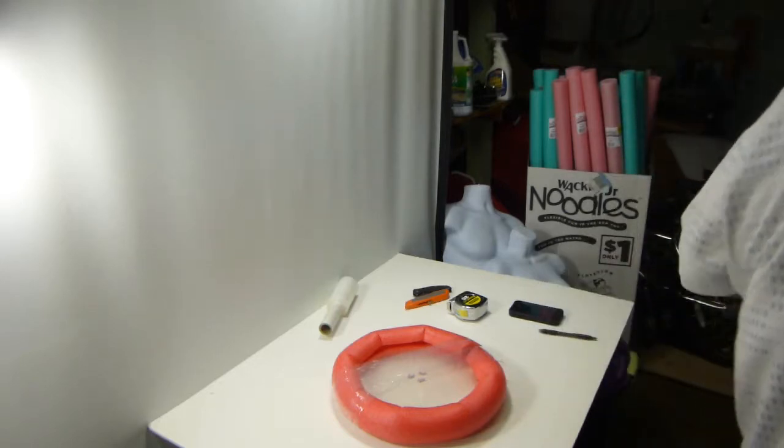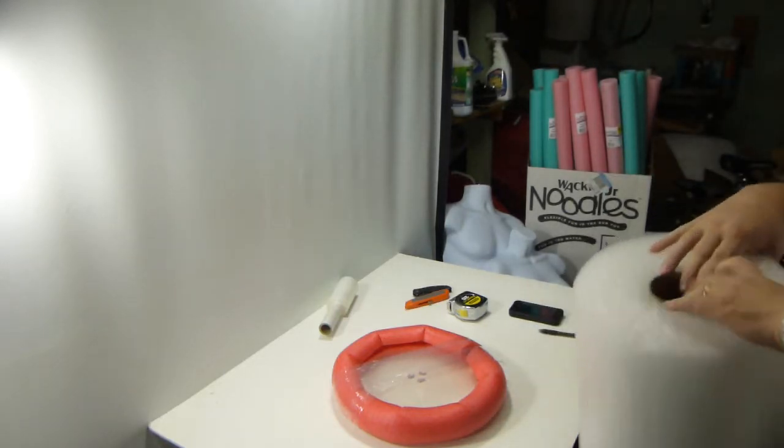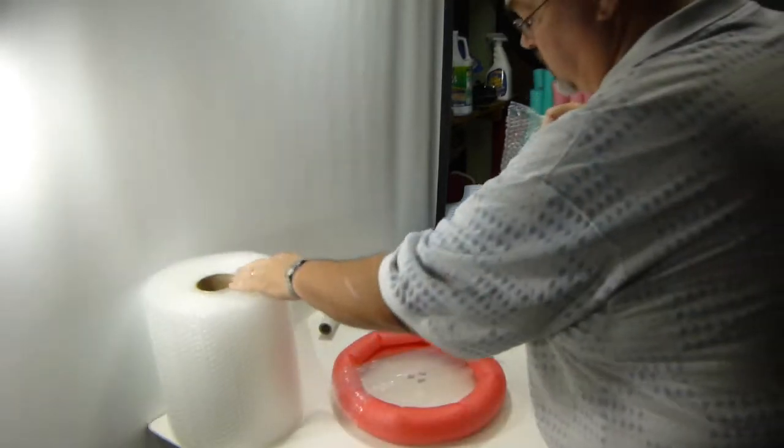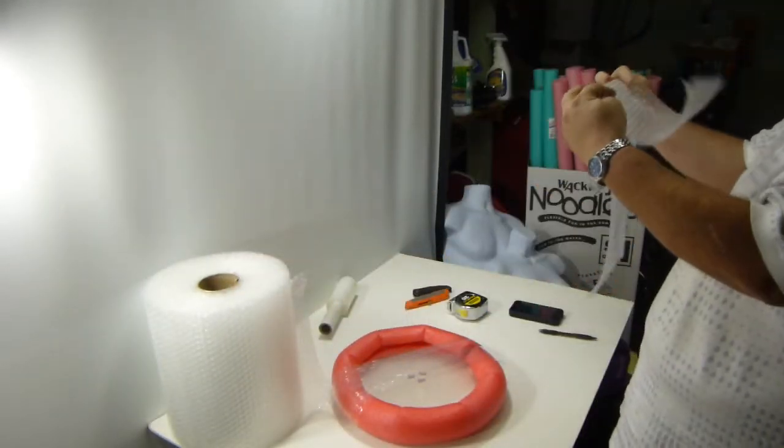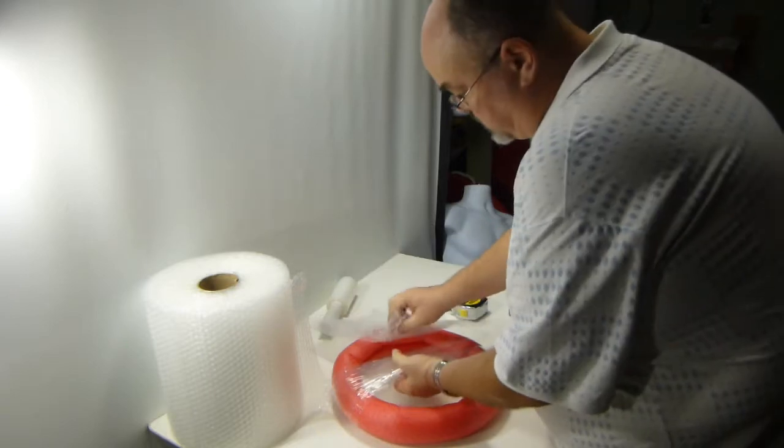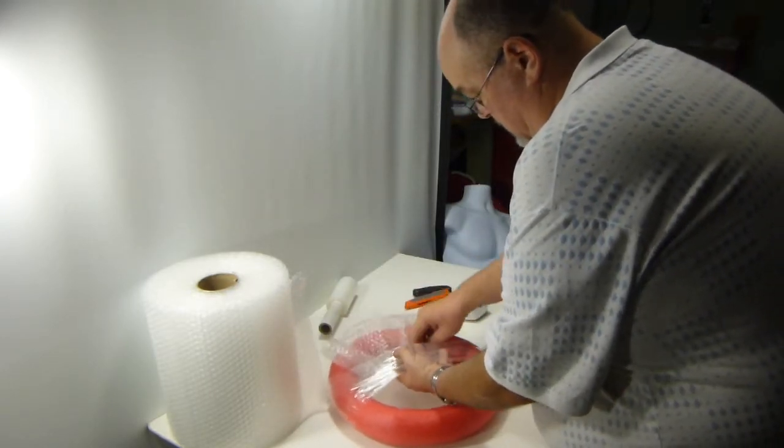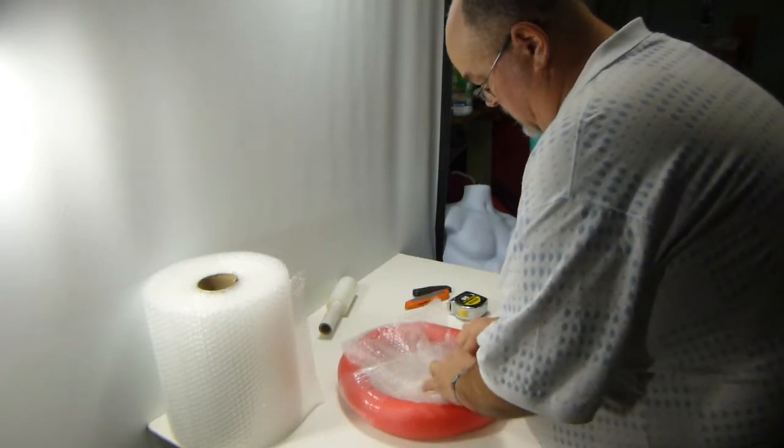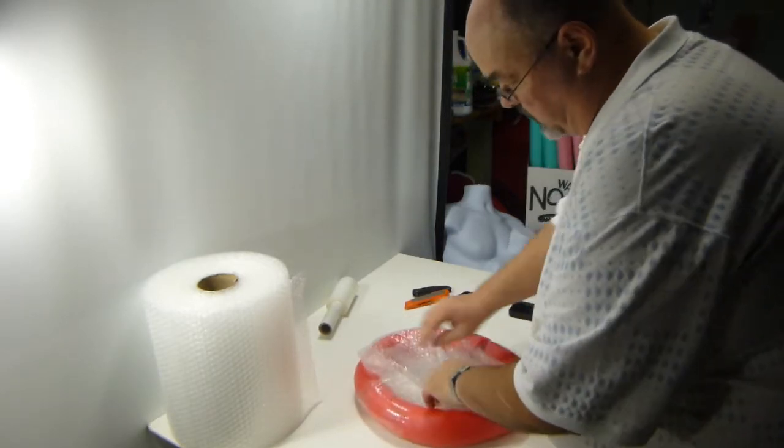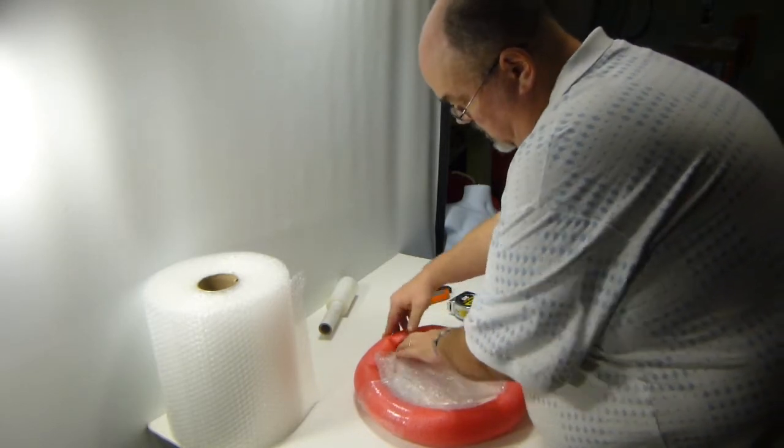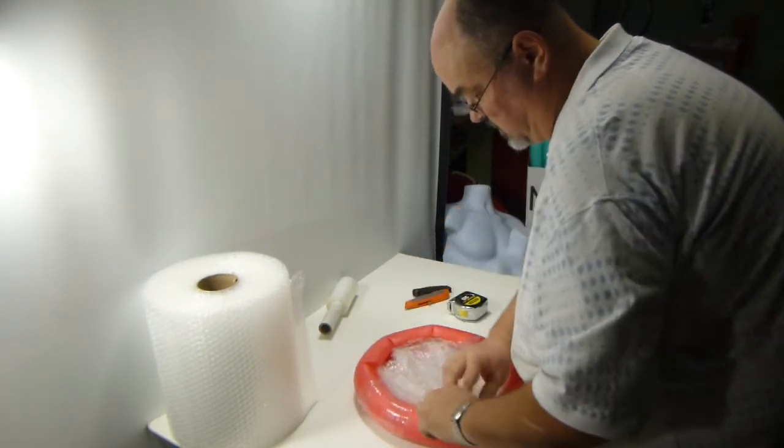Then I'll take a couple sheets of small bubble wrap—I'd say two sheets if you've got the one-foot perforations on it. Slide that in and then just tuck some under here so it stays in place.